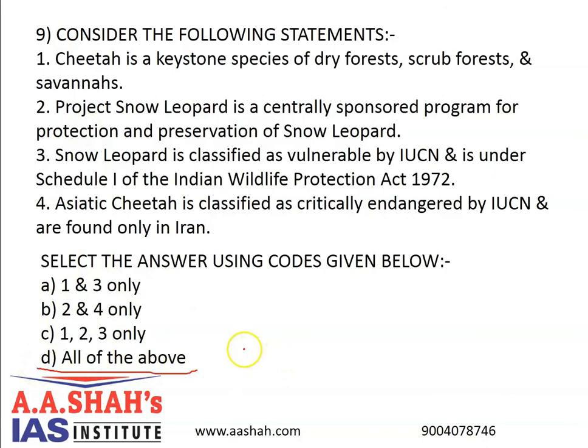The correct answer is D: All of the above. The Supreme Court has allowed the centre to introduce the African cheetah from Namibia in Africa to a suitable habitat in India. The cheetah was officially declared extinct in India in the year 1952. It is one of the oldest of the big cat species, with ancestors that can be traced back more than 5 million years to the Miocene era. Problems like human-wildlife conflict, loss of habitat, loss of prey, and illegal trafficking have decimated their numbers. IUCN status: African cheetah — vulnerable; Asiatic cheetah — critically endangered, surviving only in Iran.